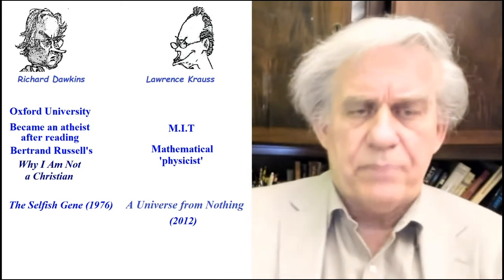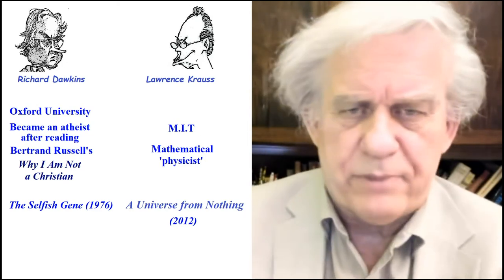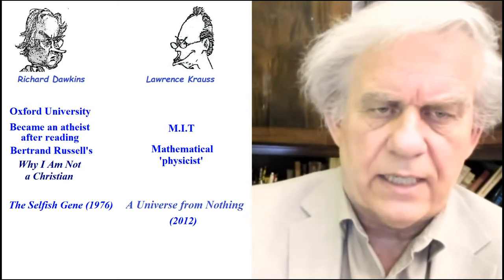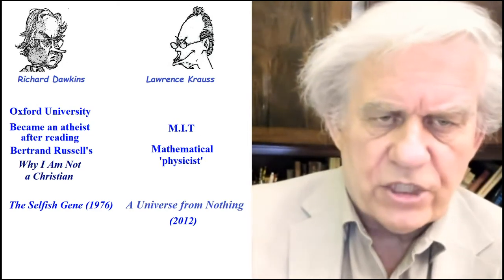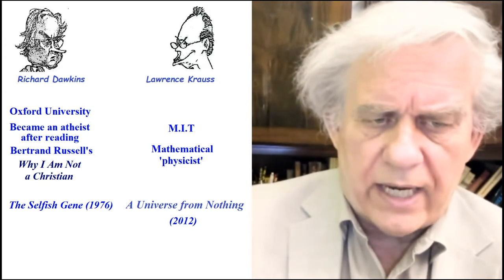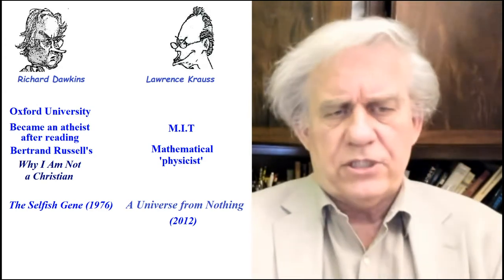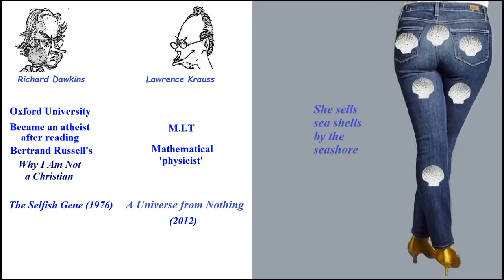He wrote his most popular book, 'The Selfish Gene,' which sold quite a bit. I can see why. This other fellow, Lawrence Krauss, he comes from MIT. He's a mathematical physicist, meaning he's not a scientist. Here's what he wrote: 'Universe from Nothing' — the subject of today. At the bottom you can see he says, 'I have focused on either the creation of something from pre-existing empty space, or the creation of empty space from no space at all.'